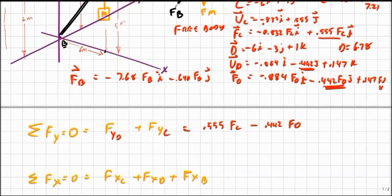And those are the only two that have a component in the Y direction. So I can solve for F sub C equals 0.796 F sub D.